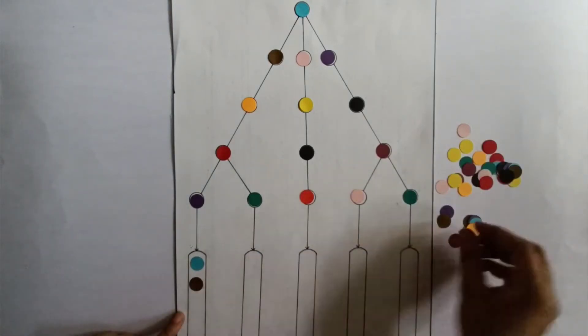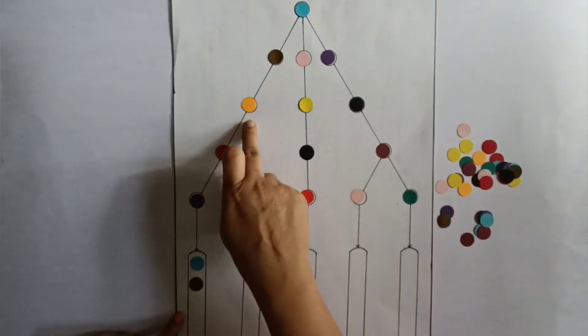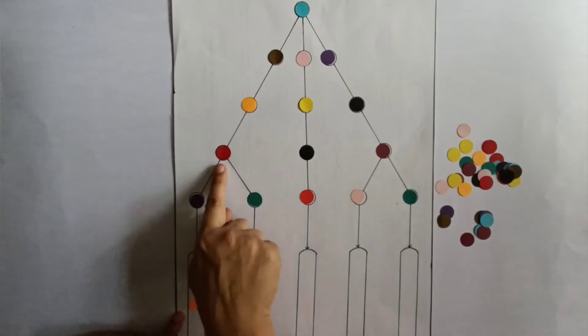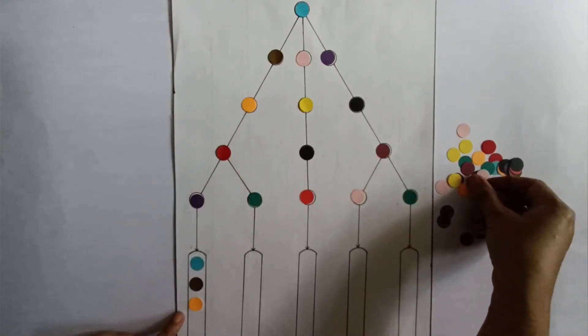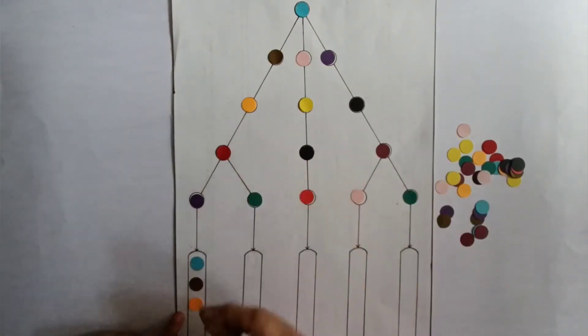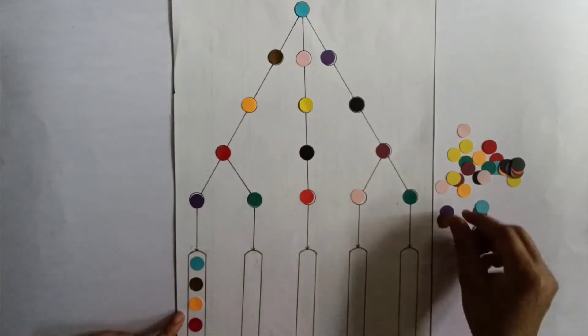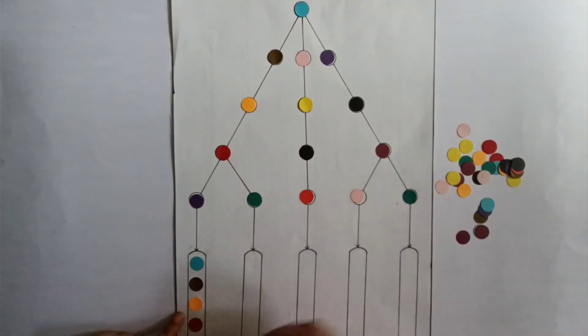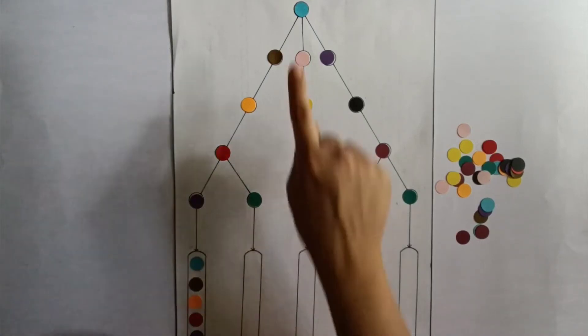After that, the child would take the next color, which is brown, then the orange one and place it under brown, then the red color and place it under orange, and the last color is purple. So the child would take purple and place it here.